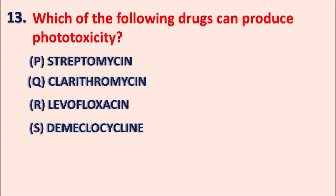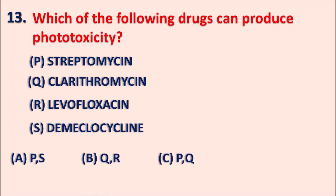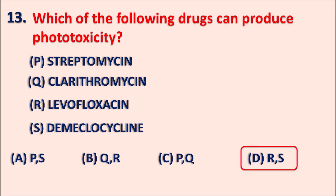So here we have to select the drugs which are going to produce phototoxicity. Options: A: P and S, B: Q and R, C: P and Q, and D: R and S. The correct answer is R and S.